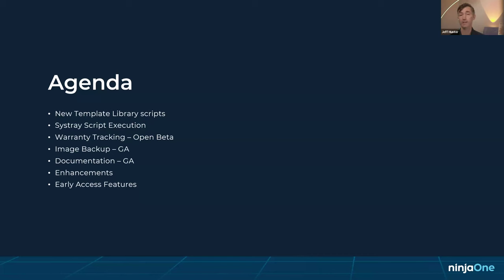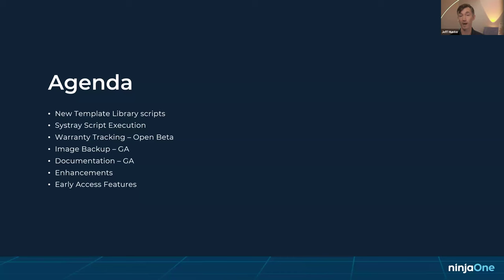We'll also talk about warranty tracking, which is moving into open beta with the 6.0 release. Right now, only the Dell manufacturer is available, but 6.0 will expand warranty tracking to encompass Dell, Toshiba, Lenovo, and HP. Warranty tracking is going to be an included feature with a NinjaOne subscription at no additional cost, which is tremendous value compared to what other warranty tracking services charge.